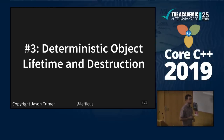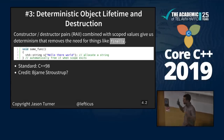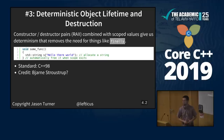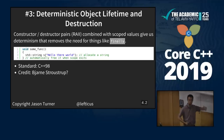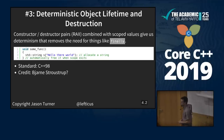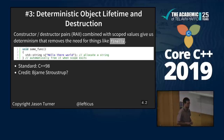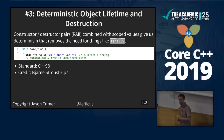Number three: deterministic object lifetime and destruction. We have the ability to use constructor and destructor pairs. RAII combined with scoped values gives us this determinism and removes the need for things like 'finally' or garbage collection — we know when these objects are going to be created and destroyed. Credit also goes to Bjarne Stroustrup. This has been around as long as C++ has existed.